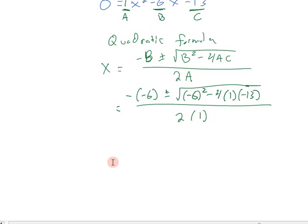It's all just numbers. Negative negative 6 gives us positive 6 plus or minus the square root of 6. Negative 6 squared is 36. Negative 4 times negative 13 gives us positive 52. And we'll divide all of that by 2.